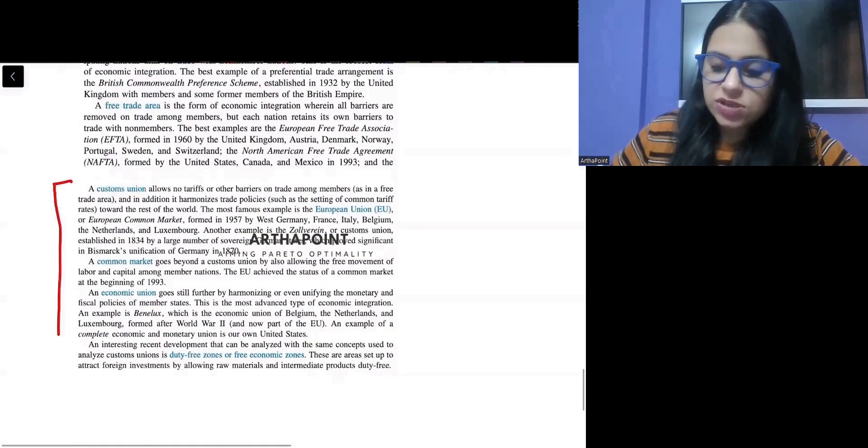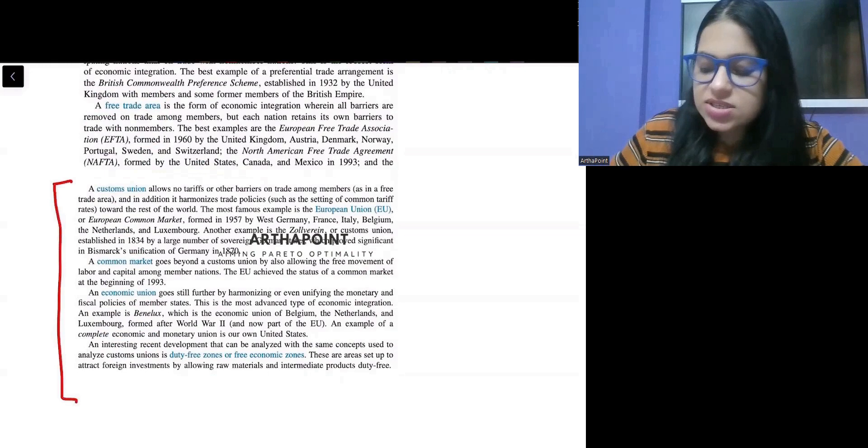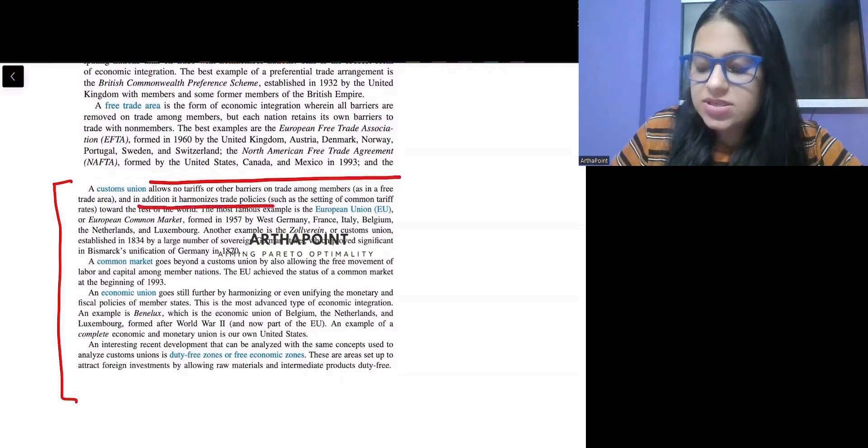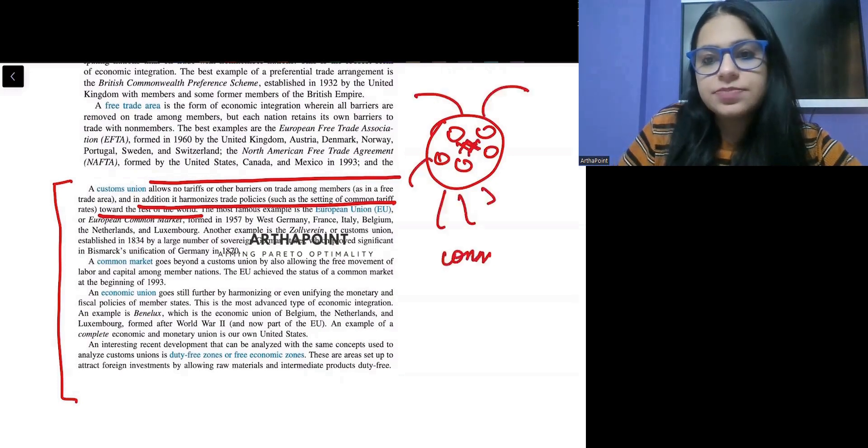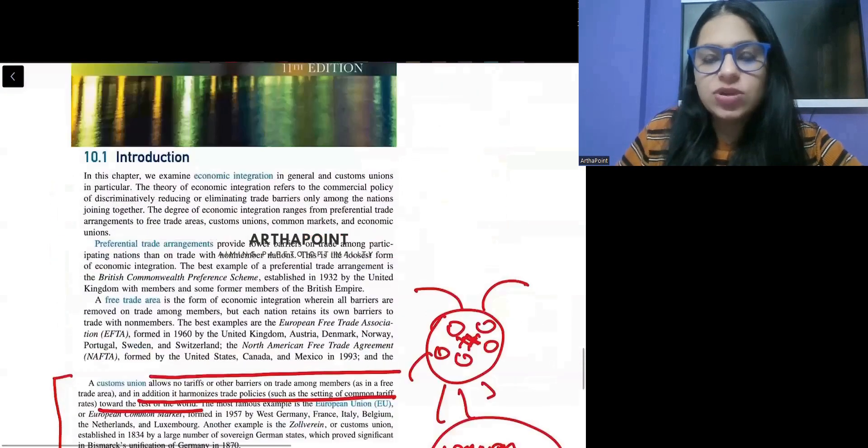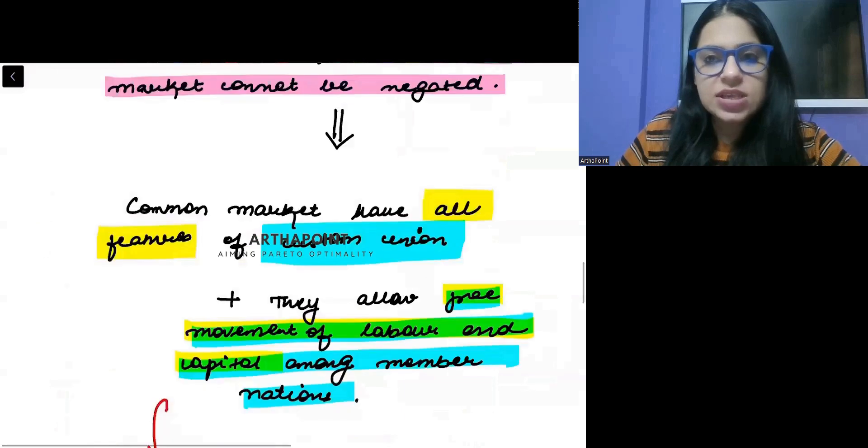And these are the definitions which are given to you. So it says a custom union allows no tariff or barriers on the trade among members. And in addition, it harmonizes the trade policies towards the rest of the world.